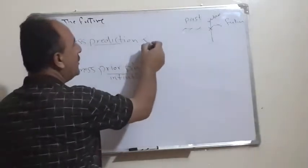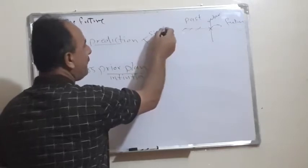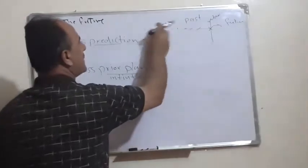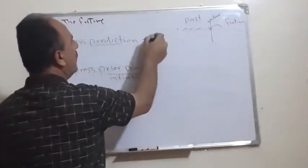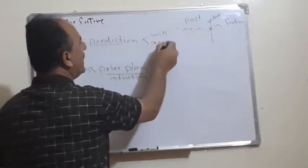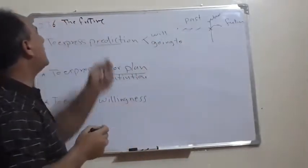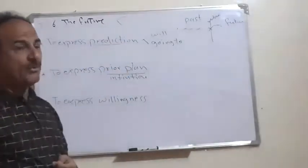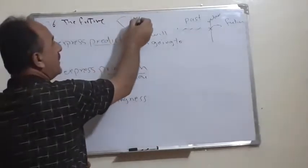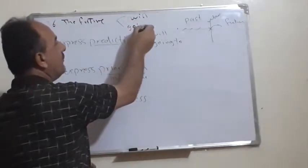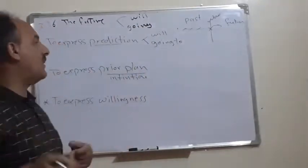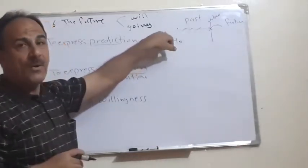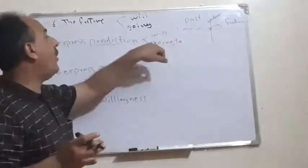To express a prediction, it is possible to use either 'will' or 'going to.' The future is represented by two main forms — will/shall or going to — and we choose between them based on meaning.